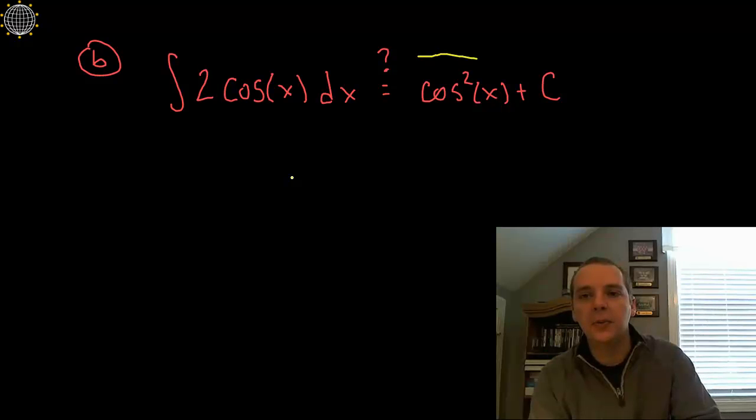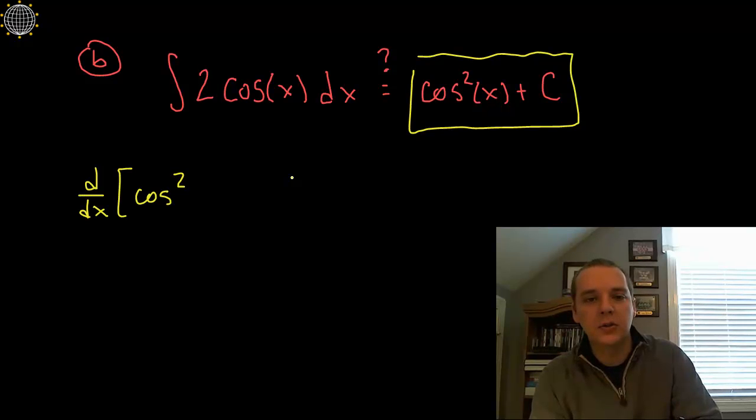But if we didn't realize that, we could take this guy and take the derivative with respect to x of cosine squared x. The derivative, this would be a chain rule problem. Bring the 2 down, copy the inside.